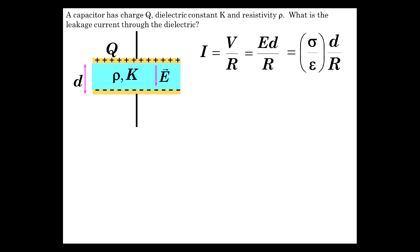But sigma, surface charge density, is charge over area, and resistance is rho L over A. So let's expand this out. Now we have a whole bunch of stuff to contend with.